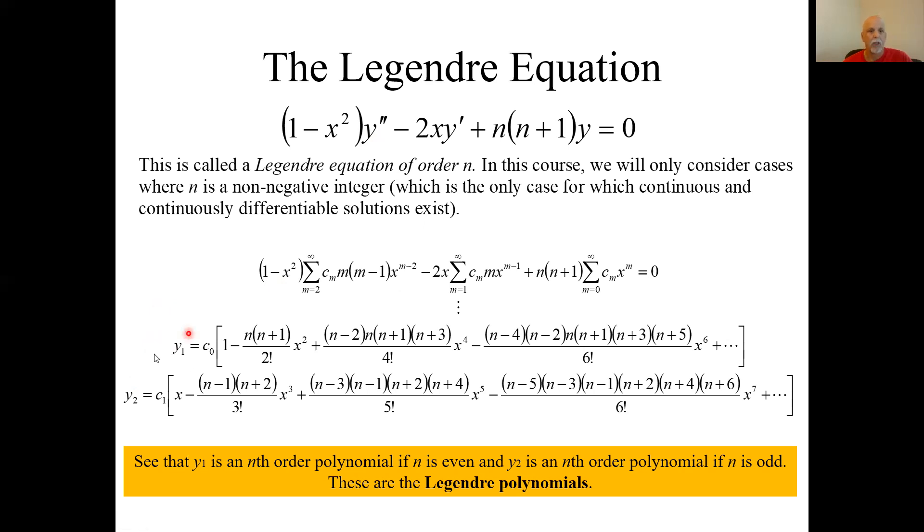Notice a couple things. What if for this first particular solution, what if n is even? Say zero. Let's go through them, let's go through even ends starting with zero. If n is zero, I've got an n here and here, and for all those terms they all go away. It's just c₀, a constant. What if n equals two, the next even integer?